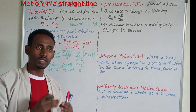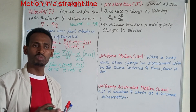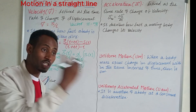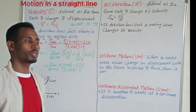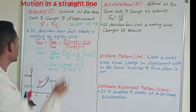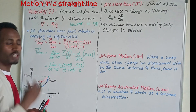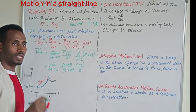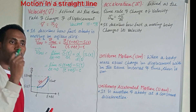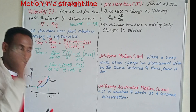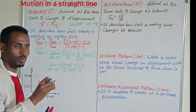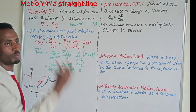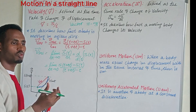With average velocity, we don't know what was happening during the interval. But with instantaneous velocity, we look at a specific point in time — when the time is at a specific point. When the change in time is approaching zero, we have detailed information.